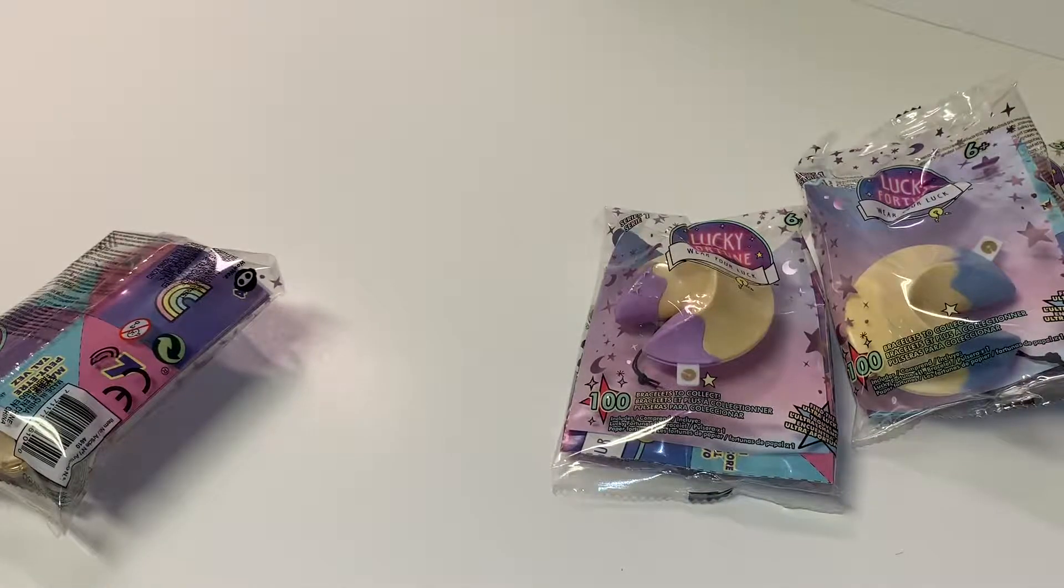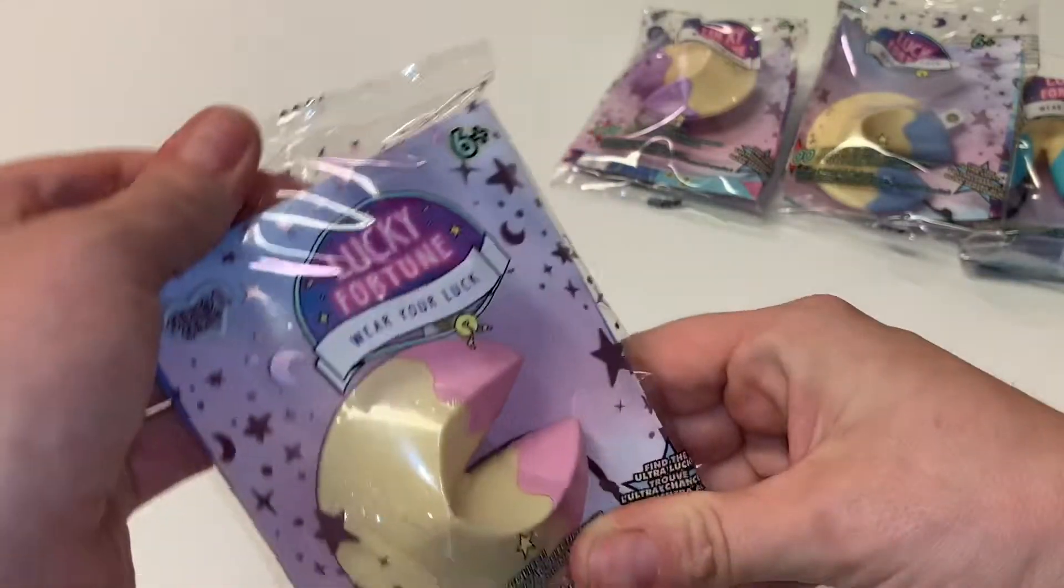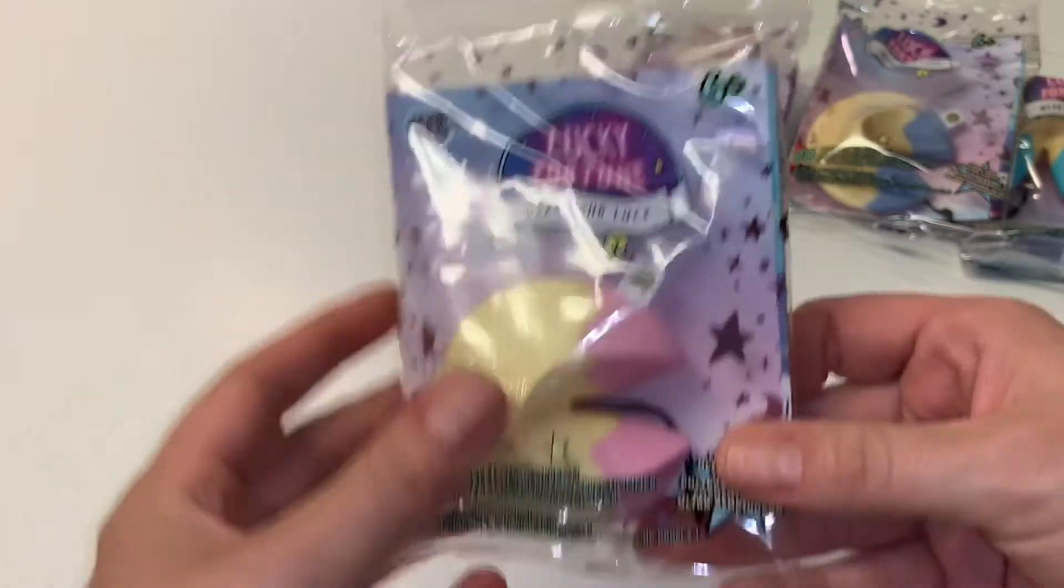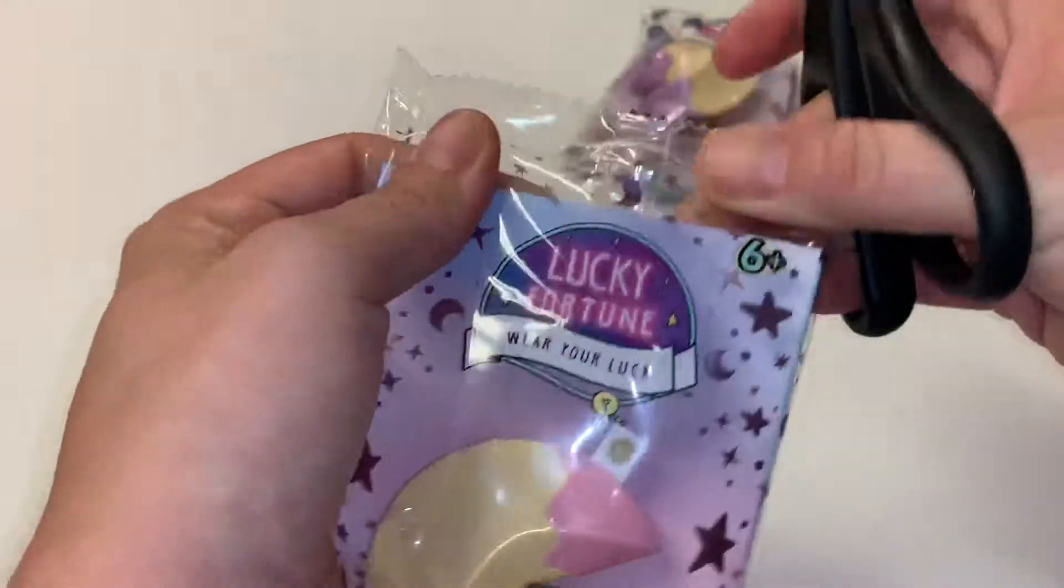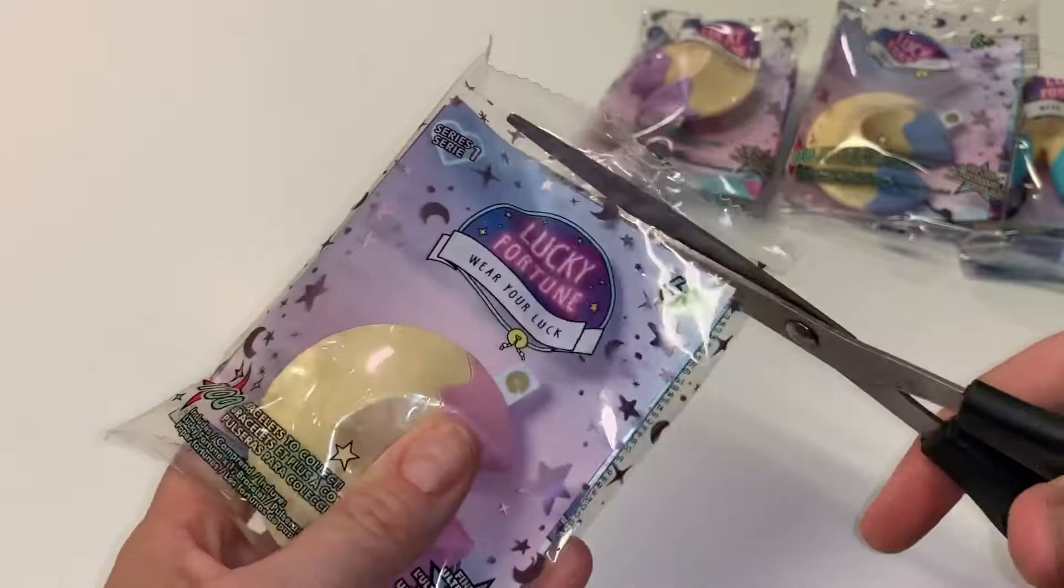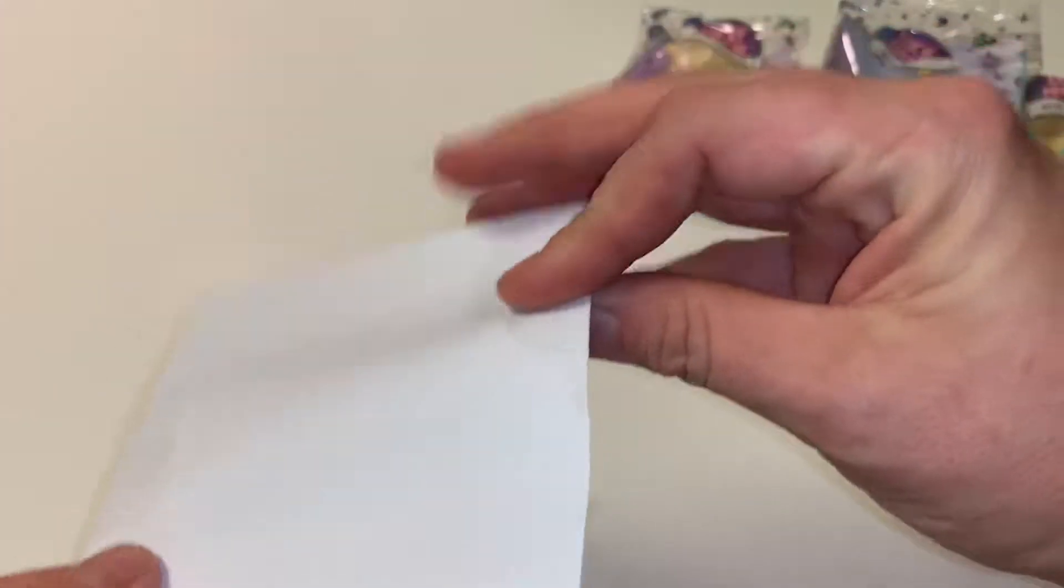All right. Let's go ahead and set things to the side. This is series one. You got to be careful if you're going to cut this open. There is a little piece of paper in there for you to use to make like one of the little fortune tellers or whatever you want to use it for.